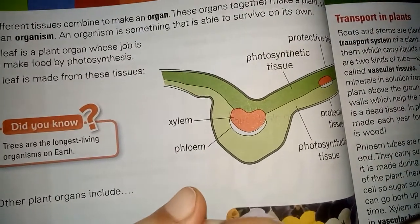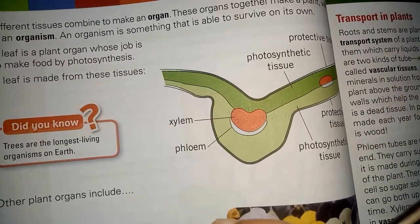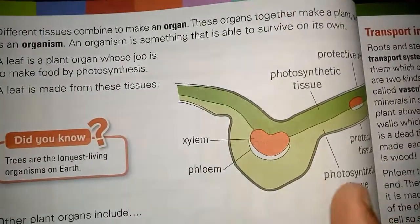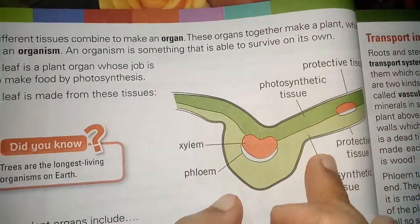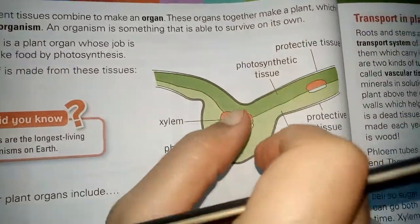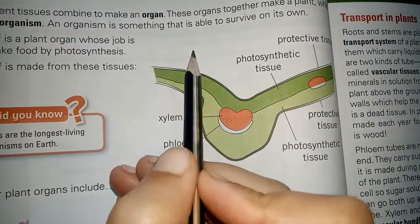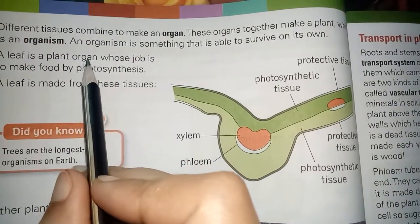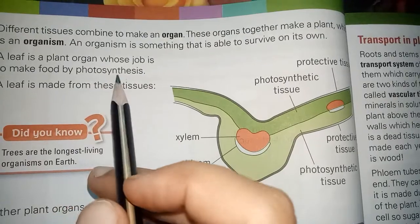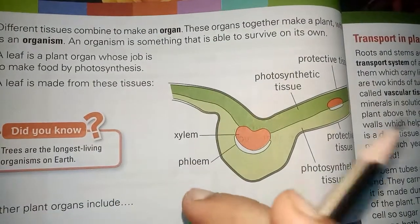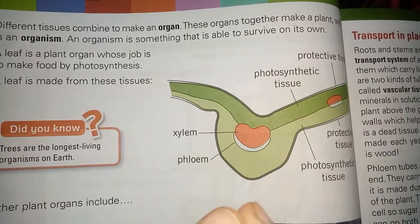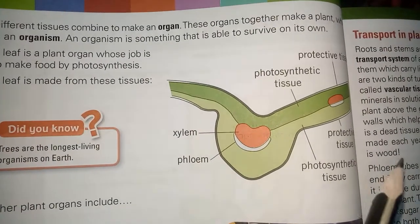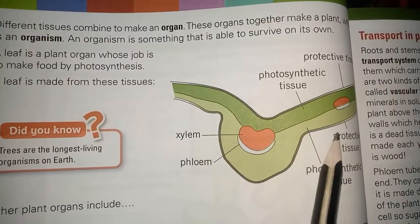Similarly, the flowers are plant organs, and the buds are also plant organs. All these are plant organs. When different organs combine together, they result in the formation of an organism. The organism uses its different body parts to perform specific functions, and in this way it remains alive.